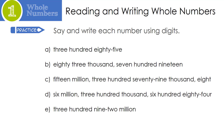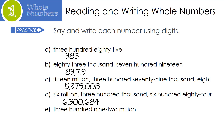Now it's your turn. Pause the video, write out the digits, and then press play to check. Let's check your numbers. The first one should be 385. Next, 83,719. Then 15,379,008. Then 6,300,684. And finally, 392,000,000,000 — wouldn't that just be lovely to have?